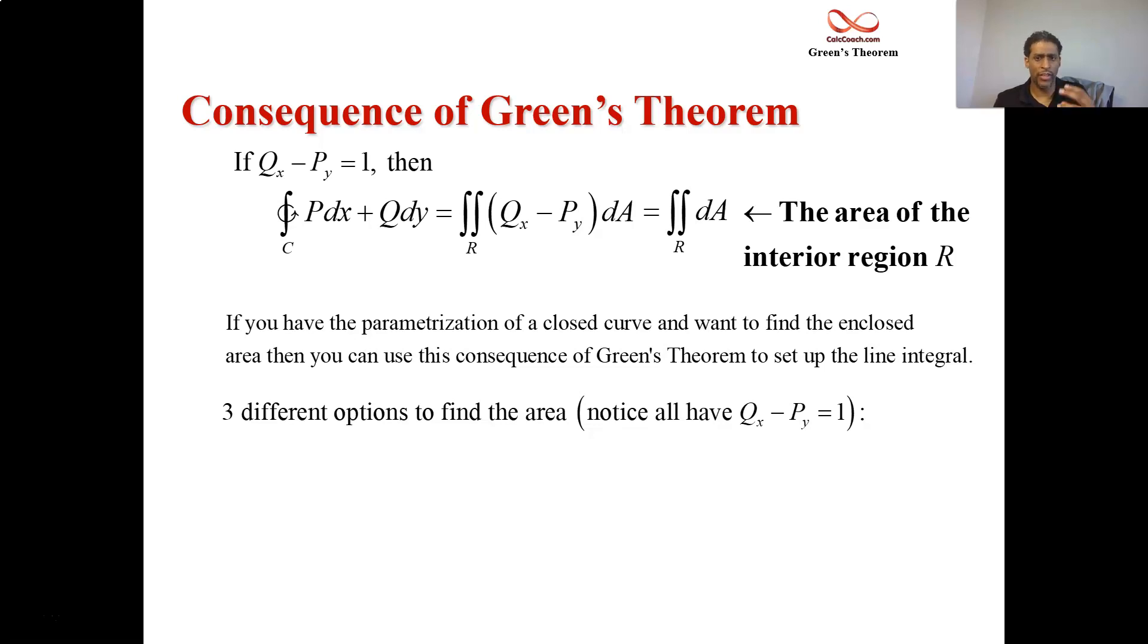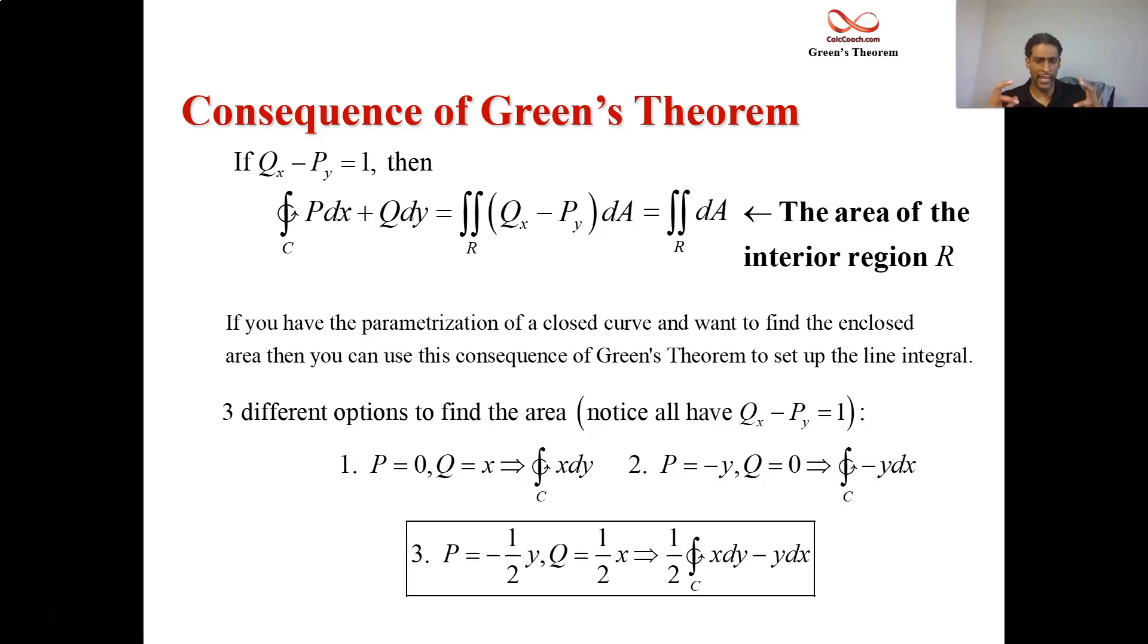There's three different options that you could do where qx minus py is equal to 1. The first one is to have p equals 0 and q equals x. The second option is to have p equals negative y and q equals 0. But the one that's most often used is when p is negative half y and q is half x. With that, you'll have qx, which is a half, minus py, which is negative a half. A half minus negative half is 1.